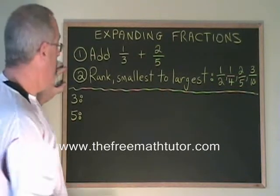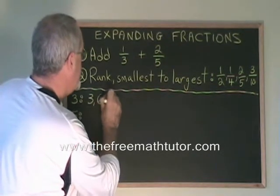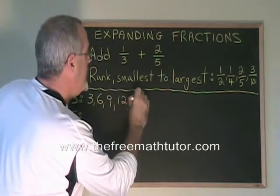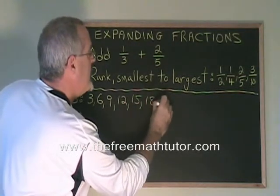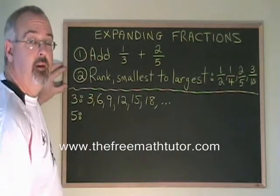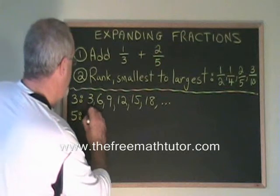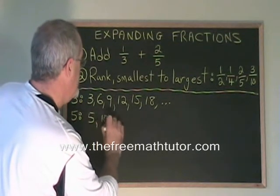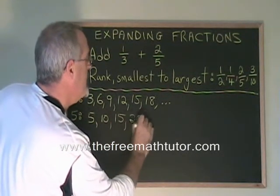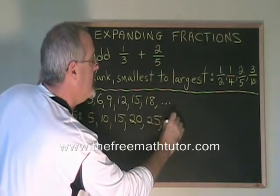The multiples of 3 are 3, 6, 9, 12, 15, 18, and the list goes on and on. The multiples of 5 are 5, 10, 15, 20, 25, and the list goes on and on.